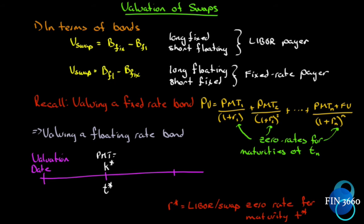Number one, we can value them in terms of two bonds. The value of the swap is equal to the value of the fixed rate bond minus the value of the floating rate bond at any point in time. We would value it this way if we were long the fixed — that's why there's an implied plus sign in front of it and a negative sign in front of the floating rate bond. We're short the floating rate, so this is for the LIBOR payer. If it were the other way around — long the floating rate bond and short the fixed — the value of the swap would be the floating rate bond minus the fixed rate bond.